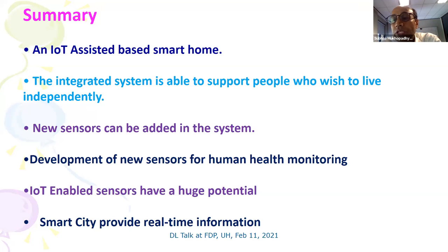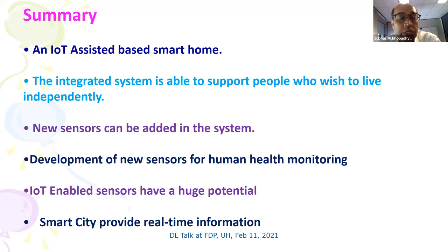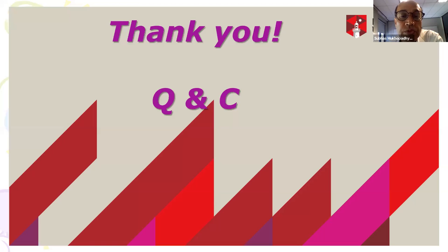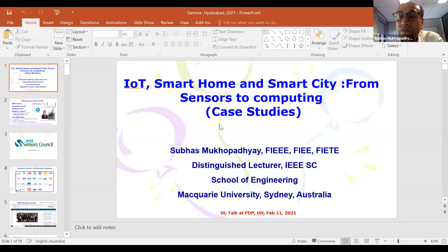In summary, what we do is develop different types of sensors for different applications and make IoT-enabled sensors so data can be seen in the cloud. Our big picture is to make those sensors for human wellness — especially in an environment like smart home that provides an environment where people can live independently. More and more new sensors are coming for human applications, IoT provides a huge potential, and smart city applications will also be coming more and more. I'll stop here and take questions now. Please feel free to ask whatever you have in your mind.